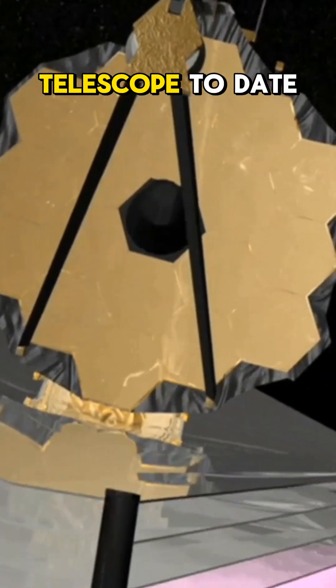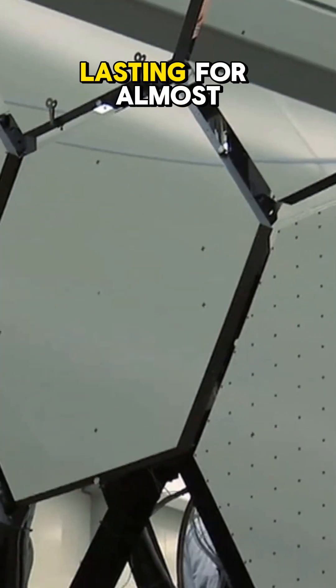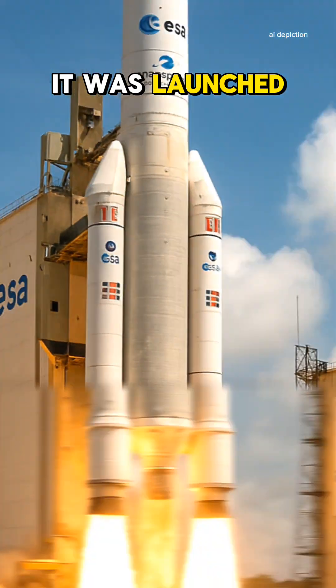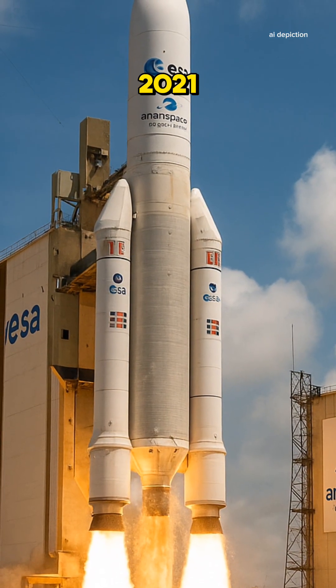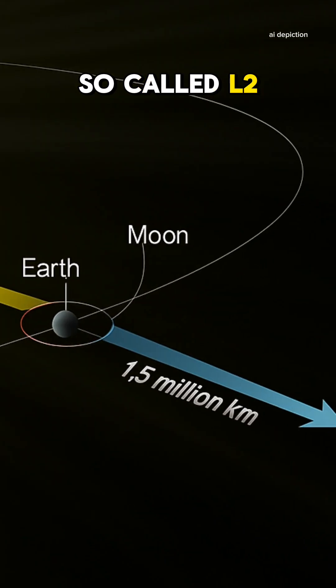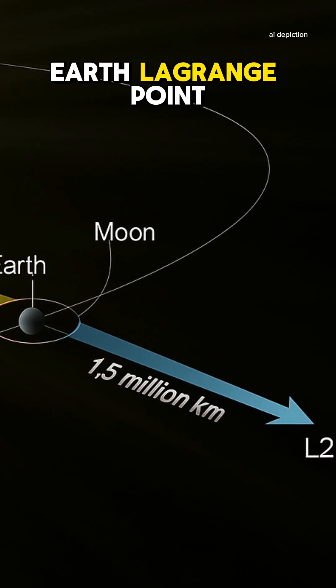It is the most complex space telescope to date. With its construction lasting for almost two decades, it was launched on December 25th in 2021 and positioned in the so-called L2, or Second Sun-Earth Lagrange Point.